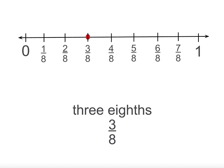You can also see where our quarters are. So 2 eighths is the same as 1 quarter, 4 eighths is the same as 2 quarters, and 6 eighths is the same as 3 quarters.